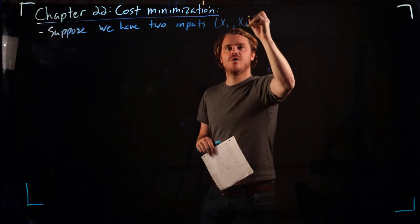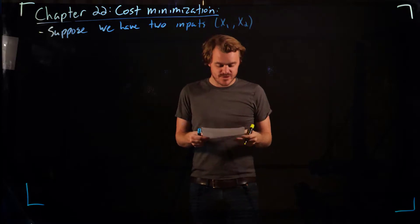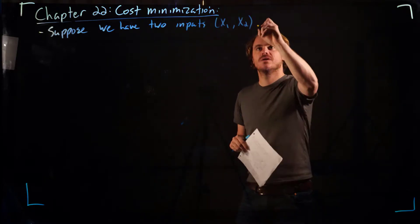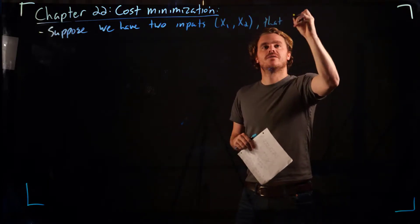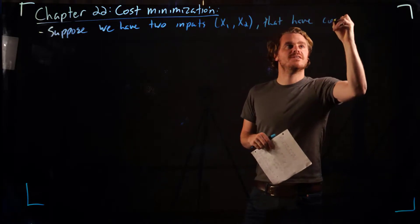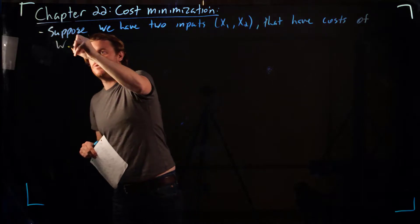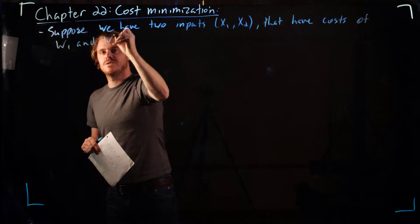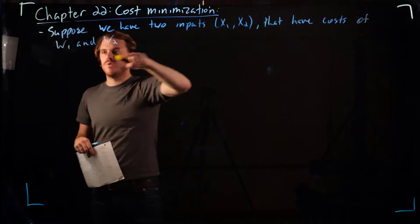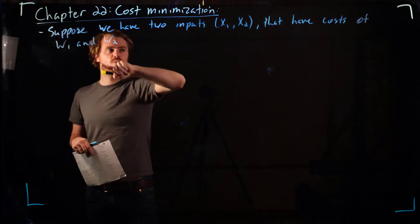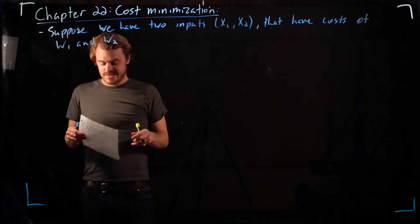where x1 is the amount of input 1 and x2 is the amount of input 2, have costs of w1 and w2. The cost of one unit of input 1 is w1 and one unit of input 2 is w2.